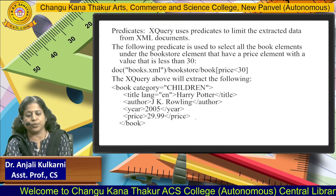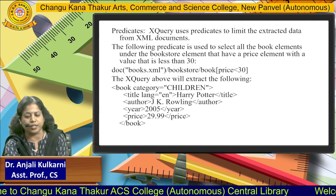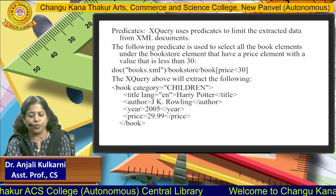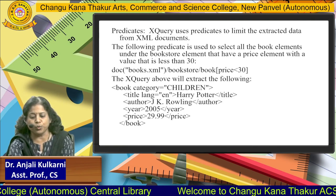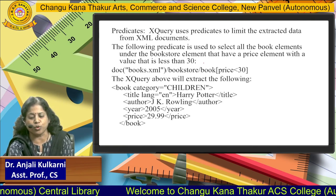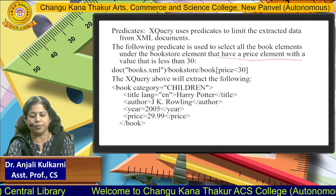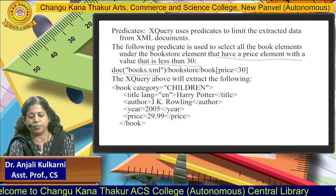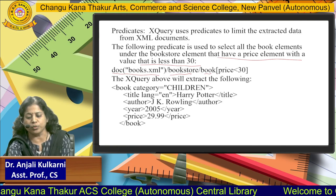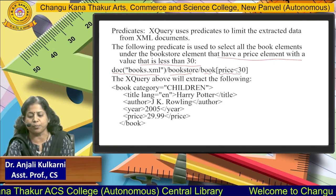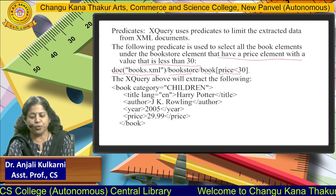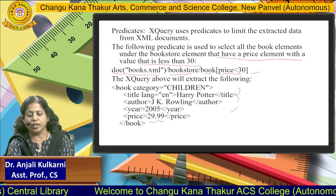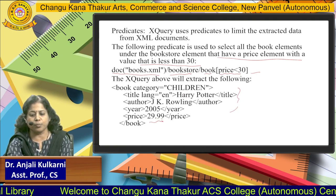Next is predicates. XQuery uses predicates to limit the extracted data from the XML document. For example, a query can extract book elements under the bookstore that have a price value less than 30. Using the query doc("books.xml")/bookstore/book[price<30], the output is the 'children' category book, which has a price less than 30.